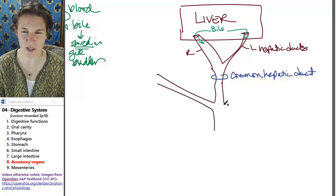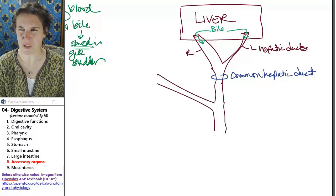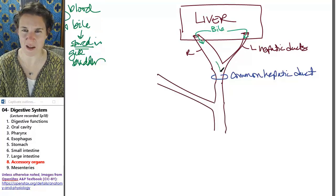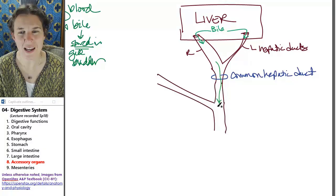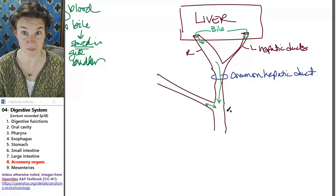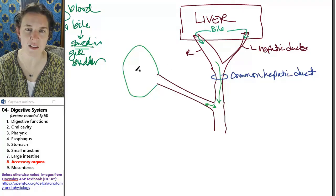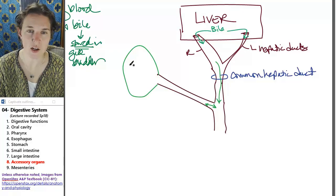And the common hepatic duct travels to a place where it actually - now this is a super interesting juncture. Most of the time you'd be like, dude, the bile is headed this direction. The bile can actually head up or down at this point.